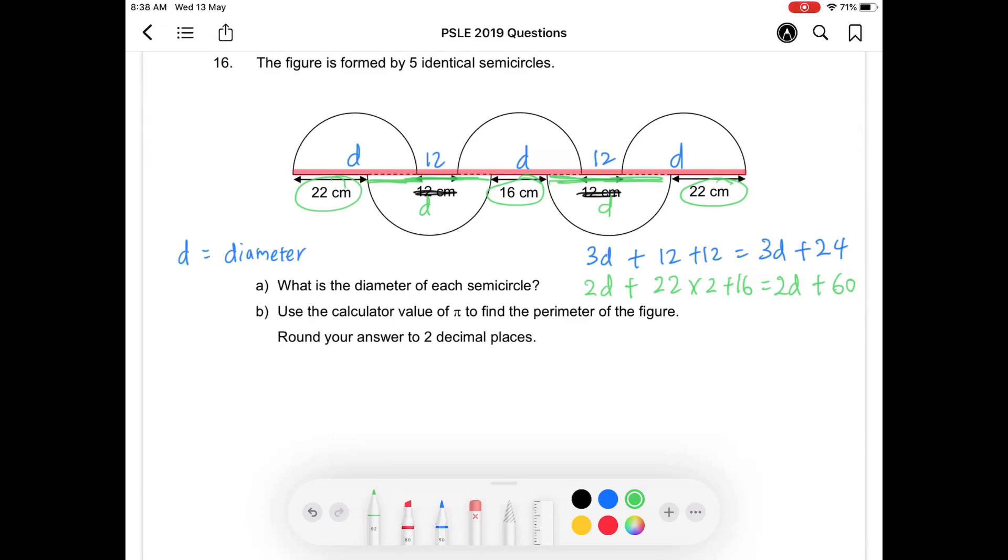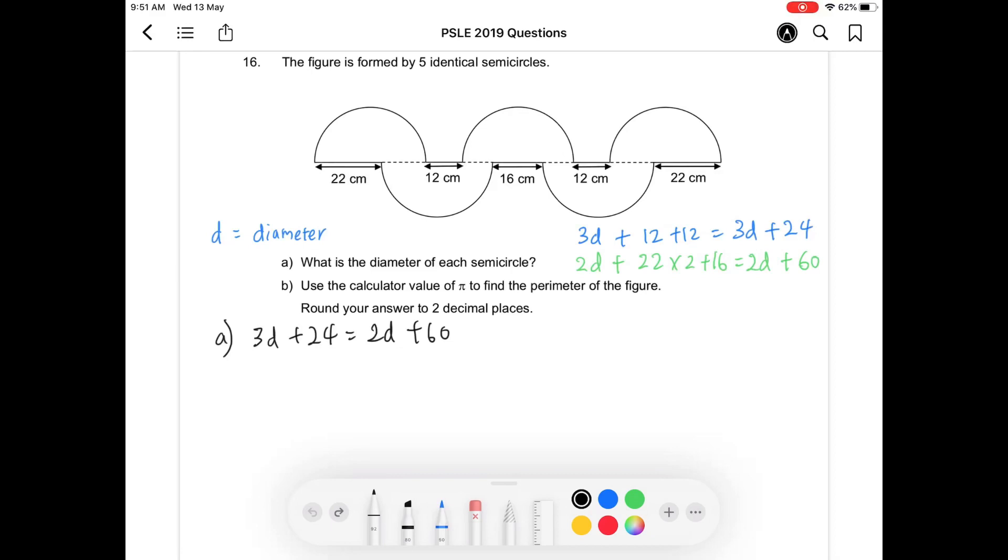So with these two equations, I can equate them together and solve part A because they refer to the dimension of the red line. So part A, 3D plus 24 is equal to 2D plus 60. So from here, you can further simplify the equations by using balancing beam.